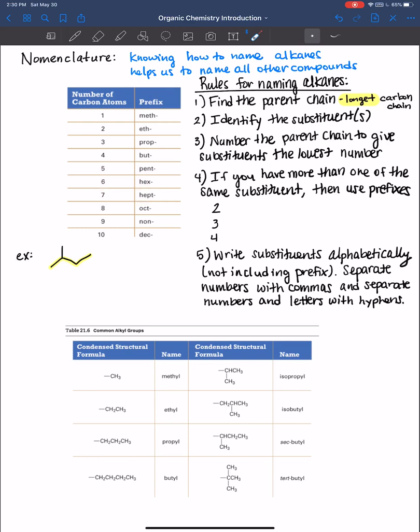7 hept, 8 oct, 9 non, 10 dec. And so because we're focusing on alkanes, this is 4 carbons long, and so that's where we look here. So this is butane.